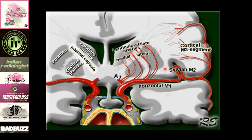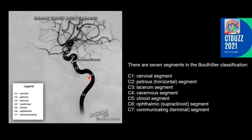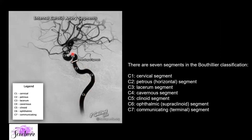The most important intracranial vessel is the internal carotid artery, which has seven segments: C1 is the cervical segment, C2 is the petrous near the petrous apex, C3 is the lacerum segment, C4 is the cavernous segment, C5 is the clinoid, and the segment after that is the supraclinoid. The cavernous segment is relatively easy to identify — it is the vertical part of the carotid artery close to the cavernous sinus. The tortuous segment following it is your clinoid and supraclinoid.